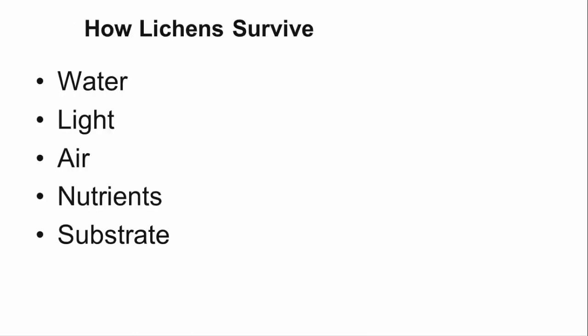In order to survive, lichens need water, light, air, nutrients, and a substrate on which they can grow. They get water from rain, fog, and can even absorb water vapor from the air.